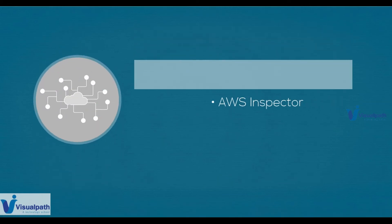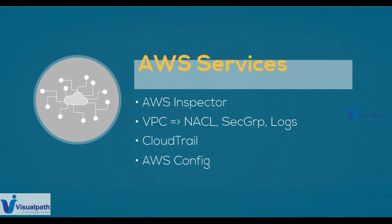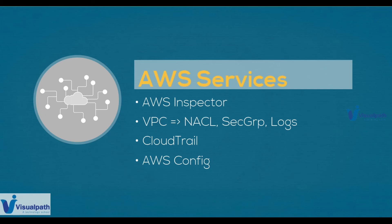More AWS security services: AWS Inspector, which scans vulnerabilities in your network and operating systems. VPC, which we already covered — we're going to focus specifically on security groups, NACLs, and VPC flow logs. CloudTrail, which records all API calls and any changes that happen in your AWS account. AWS Config, which is a very expensive but amazing service — it stores the configuration of your entire AWS account in one place and can also show you how things are changing over time.